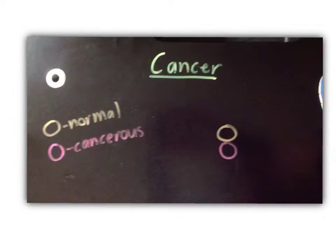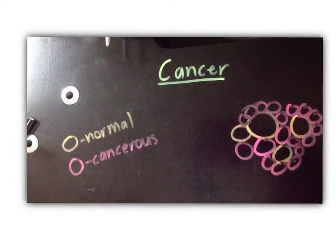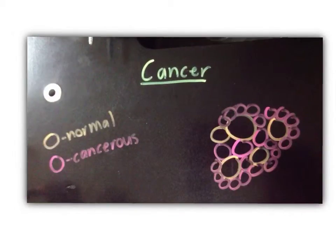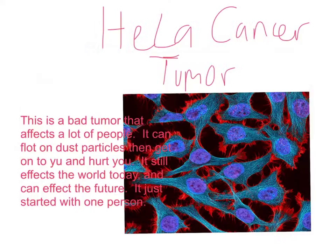Cancer cells attach onto their hosts rapidly and devour the normal cells, like this diagram. Like HeLa cancer tumor — cancer attacks cells very rapidly. It attacks them so fast that we don't have time to react. Cancer cells have affected the world today in many ways.